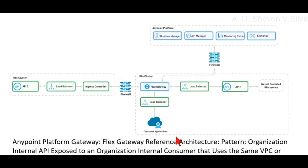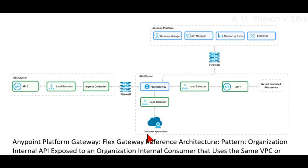When the API provider is located in a different Kubernetes cluster from Flex Gateway and the consumer application, you can do either of the following: deploy a Flex Gateway runtime on each of the clusters.